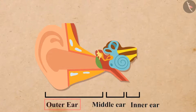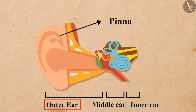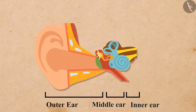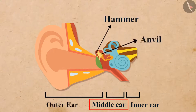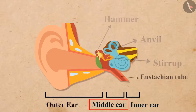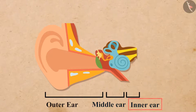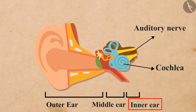The outer ear includes the pinna and the auditory canal. The middle ear mainly includes three bones: the hammer, the anvil, and the stirrup, as well as the Eustachian tube. The inner ear includes the cochlea and the auditory nerve.